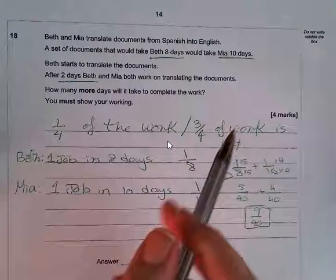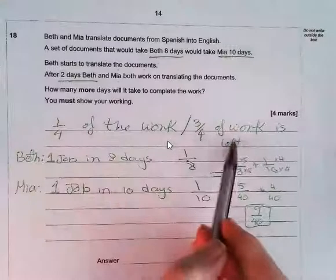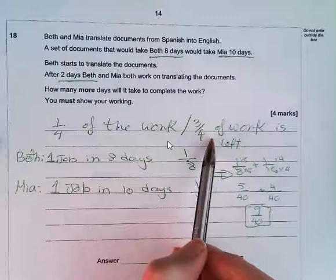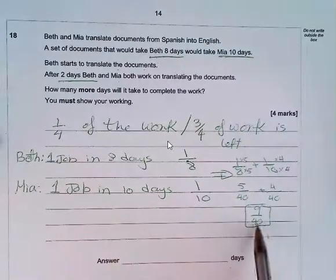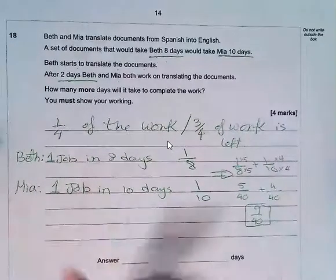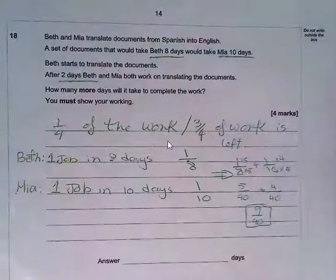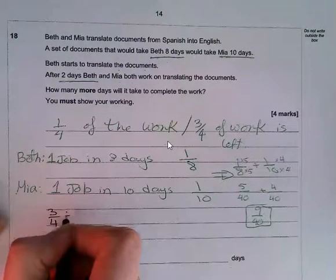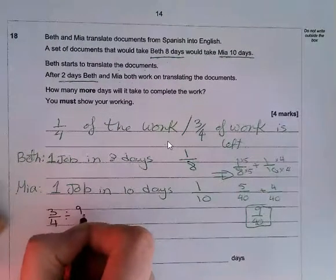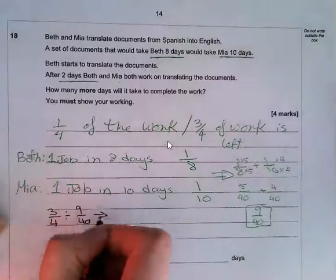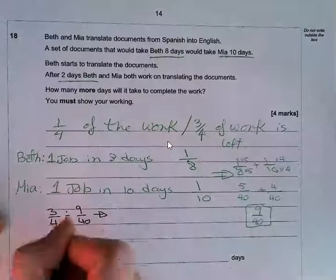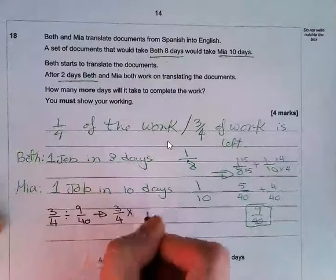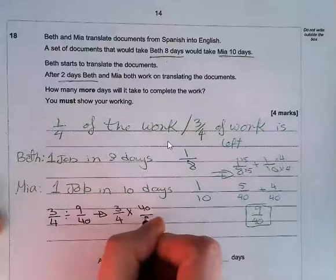Now, since three-fourths of the work is left, we are going to divide this three-fourths of the work by their combined rate. So three over four divided by nine over forty, which equals three over four multiplied by forty over nine.